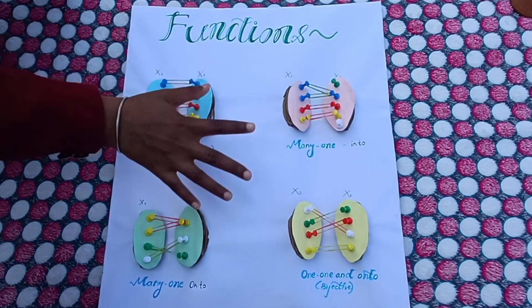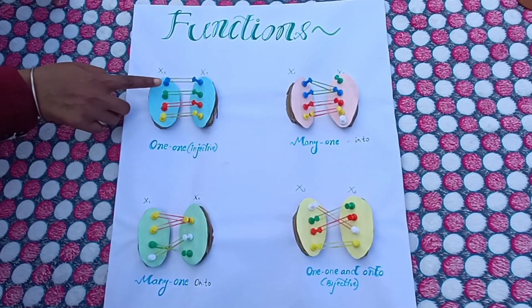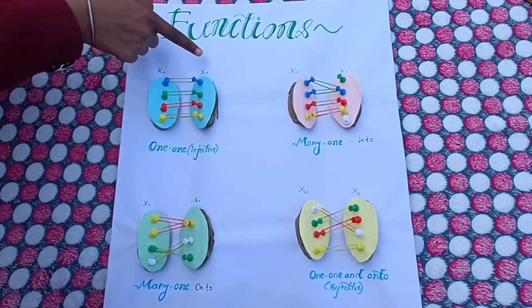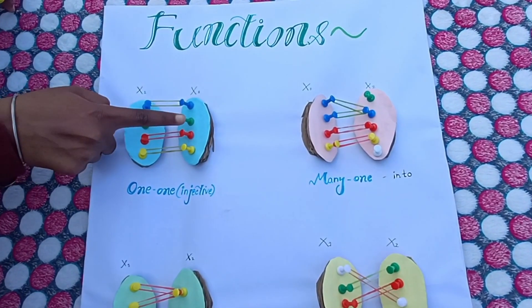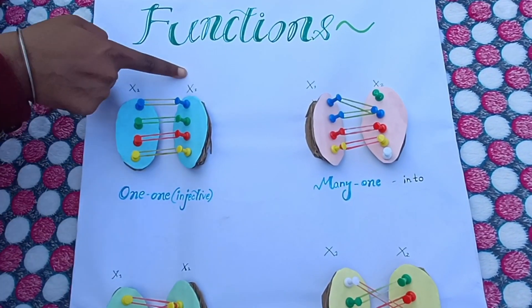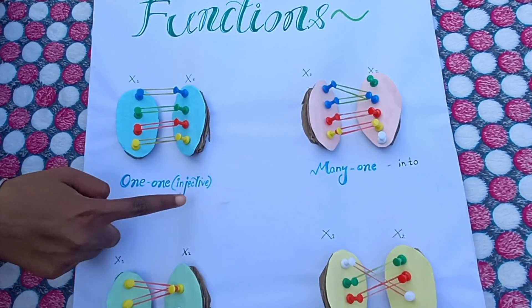The objective of this activity is to explain different types of functions. Here, I take X1 and X2. Each element of set X1 is related to one and only one element of set X2. So, this function is a one-one function. It is also called injective.